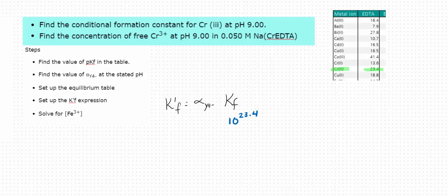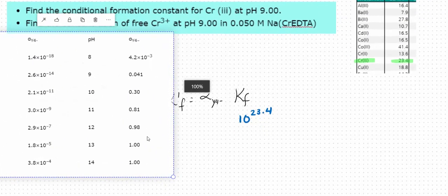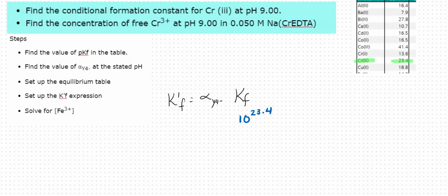The alpha value, we get the alpha value from a table. We're at a pH of nine, so my alpha value is 0.041. So I put that here.